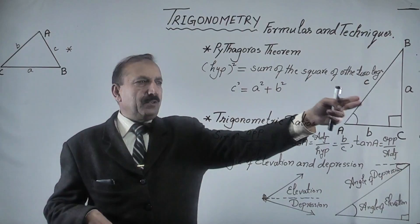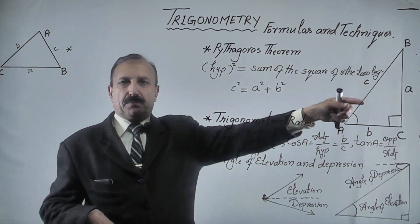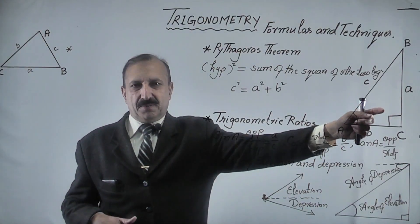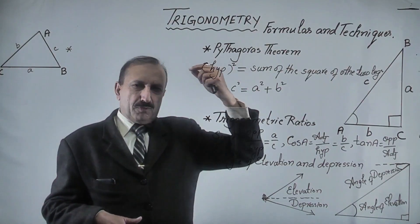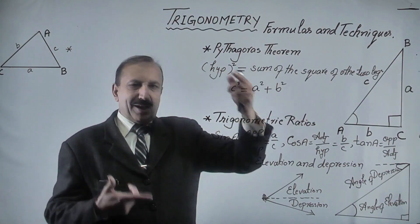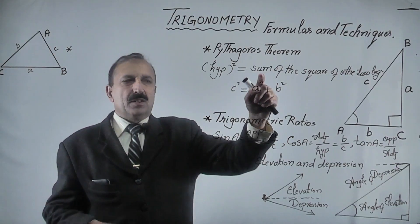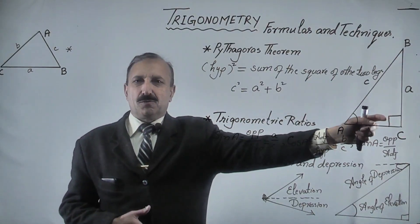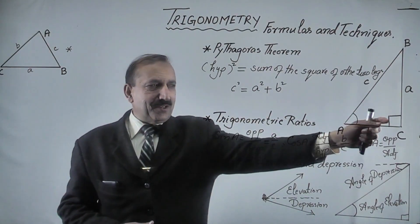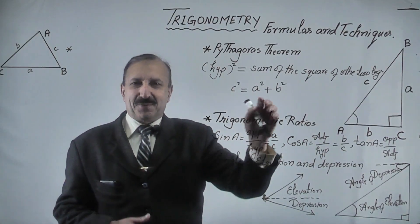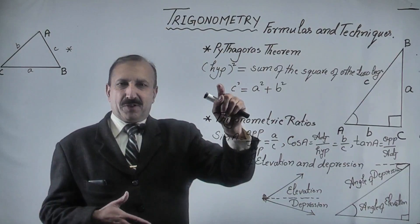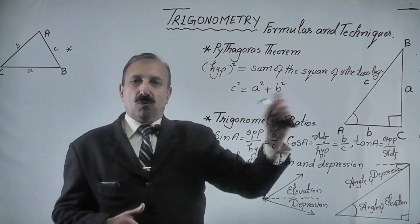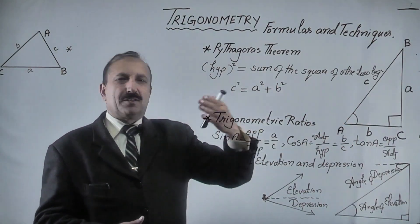First of all, when we start from right-angle triangle, the first one is Pythagoras theorem. What is Pythagoras theorem? This is basically a relation between three sides of a right-angle triangle. The hypotenuse squared equals the sum of the squares of the other two legs. But this happens only in a right-angle triangle. So if a triangle has a right angle, then this relation can be satisfied. We say this is Pythagoras theorem.